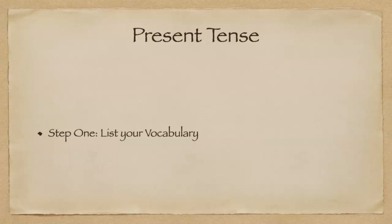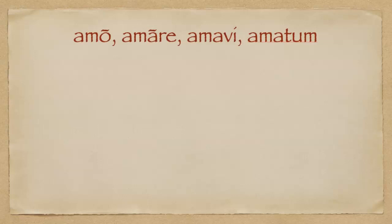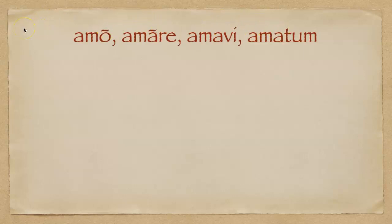Step one: I want to list your vocabulary. We're going to do the first conjugation verb 'to love': amo, amare, amavi, amatum. You'll notice I have the macron on the O and the A here. There are macrons that go over the A, I, and the AT on the ATUM, but they are not considered essential. However, these two macrons are, and I do want my students to learn them.